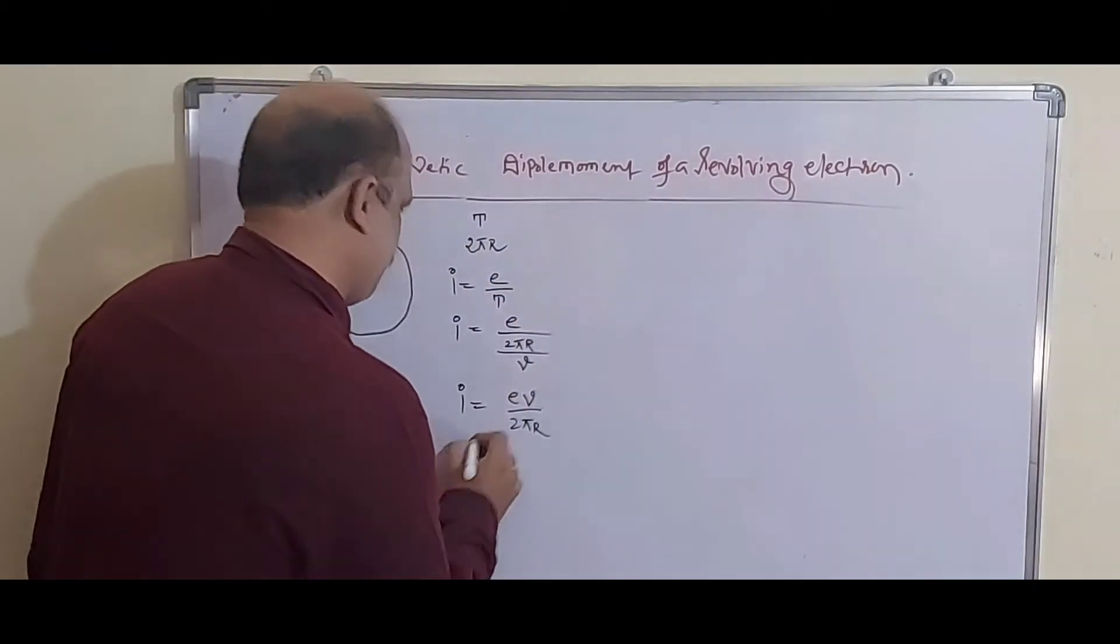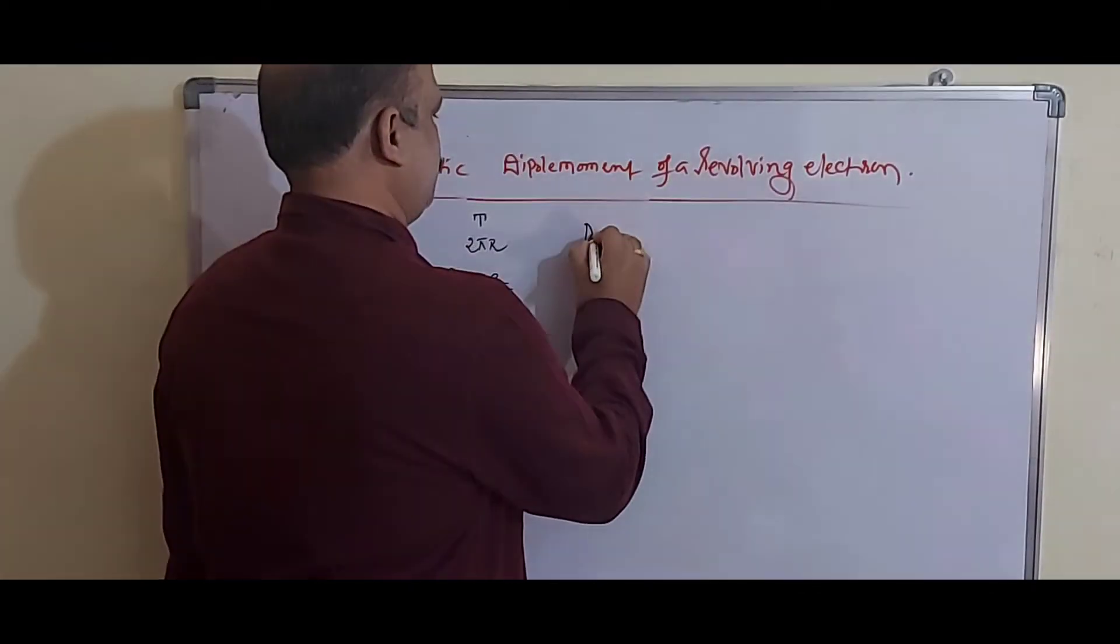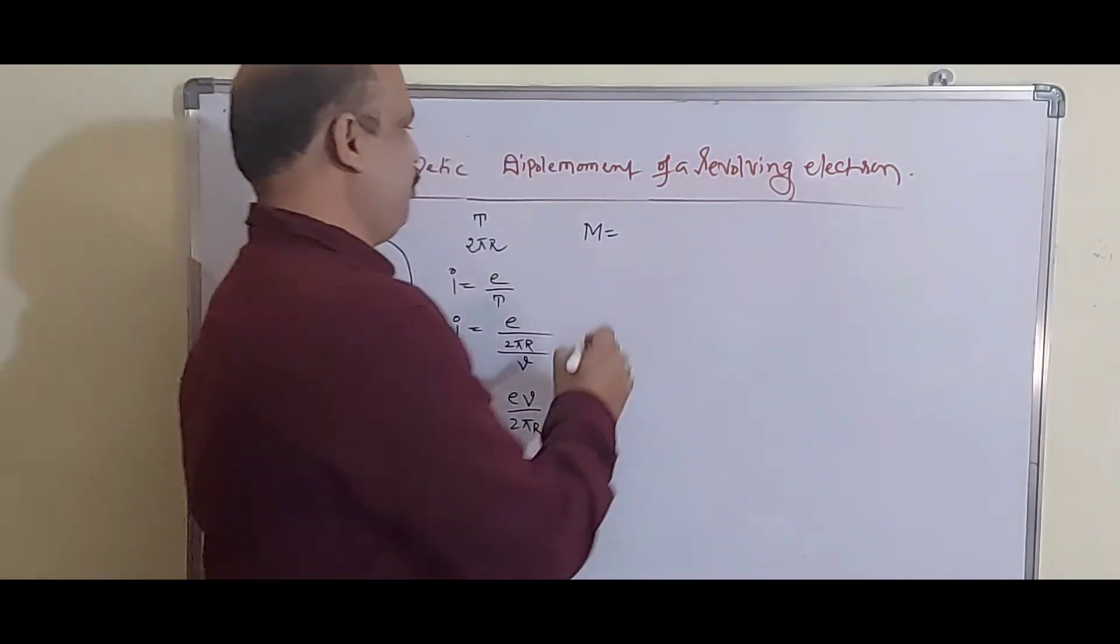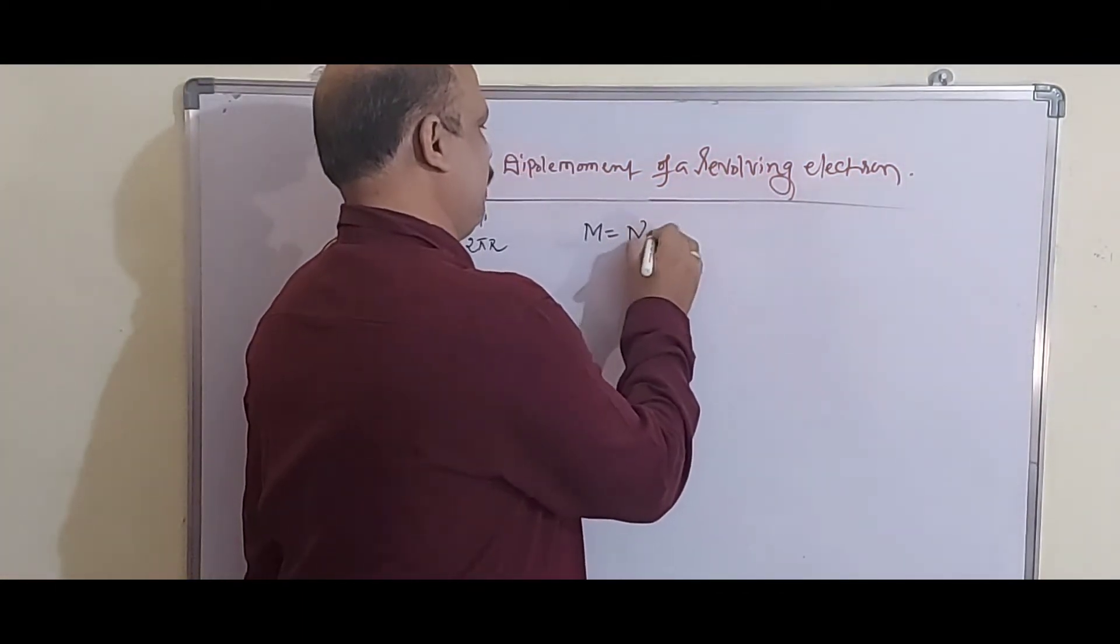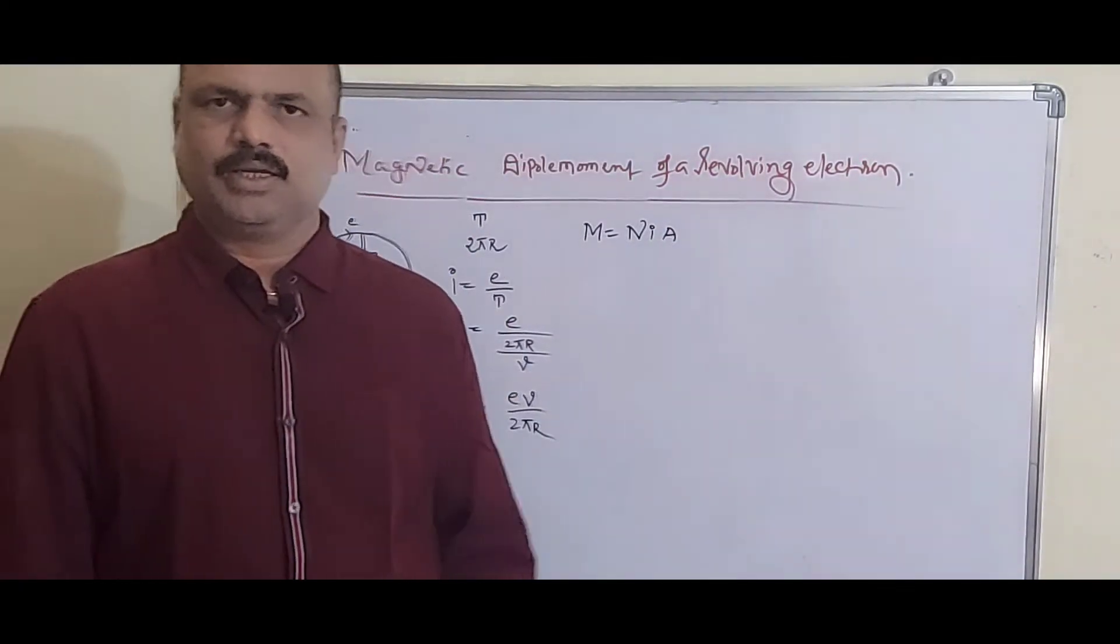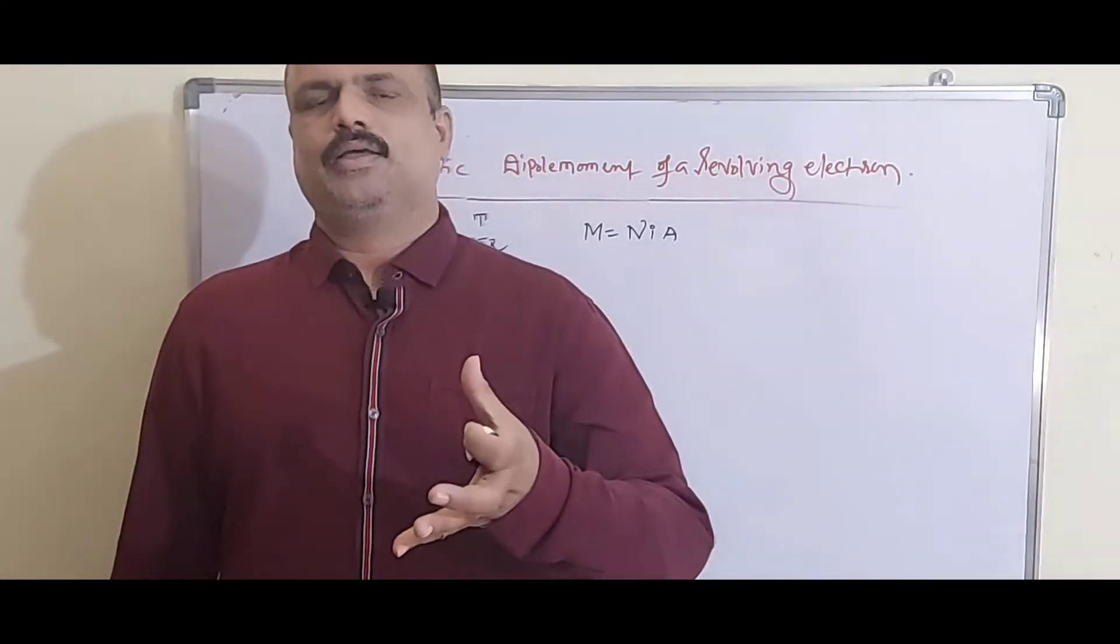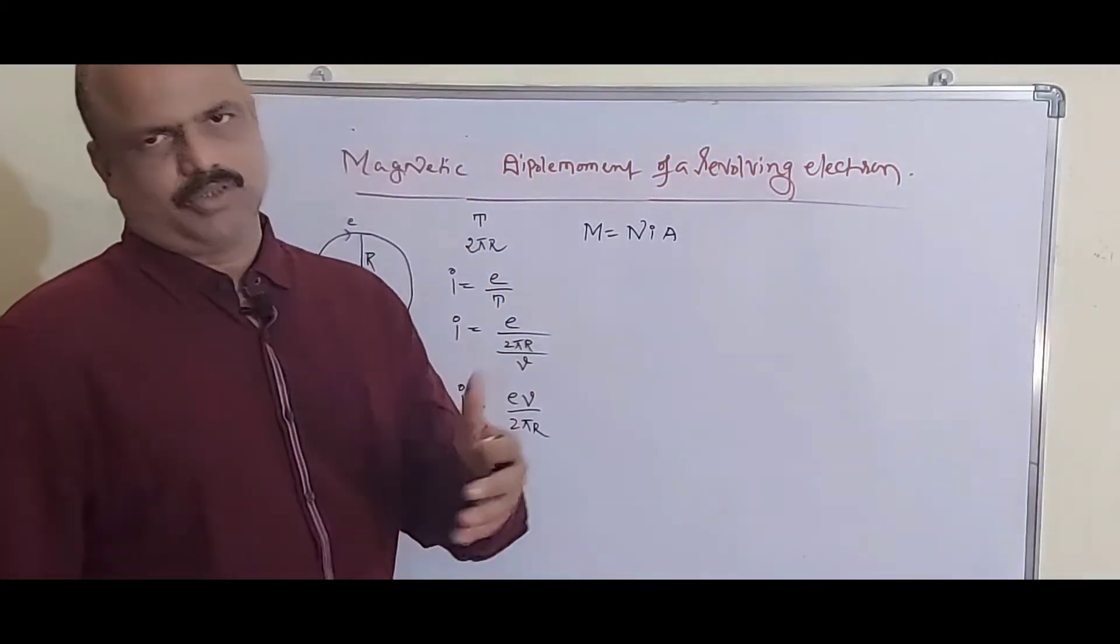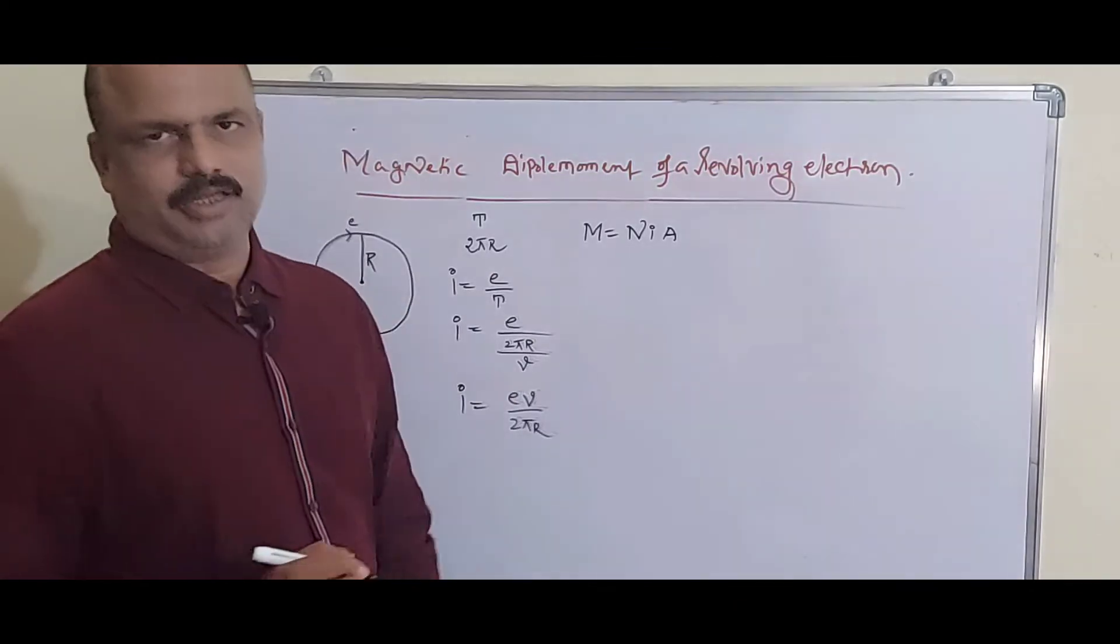What is the magnetic dipole moment? Whenever current is passing through a circular coil, M equals NIA. N is the number of turns in the coil, I is current passing through the coil, A is area of the coil.